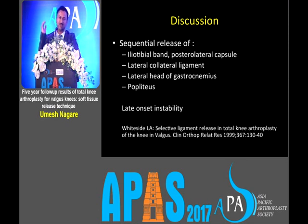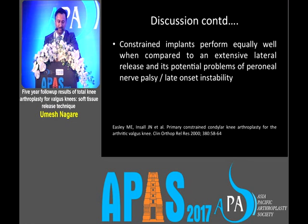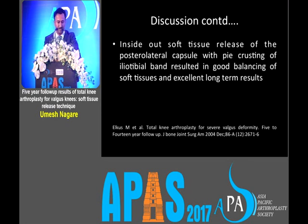Whiteside has clearly mentioned that with sequential release progressing to the popliteus, PS knees may lead to late-onset instability. Haley also mentioned that constraint implants perform the same job as medial collateral ligament advancement without the risk of non-union at the advancement site. Elsley similarly noted that constraint implants perform equally well compared to extensive lateral release, avoiding potential complications like peroneal palsy. Inside-out soft tissue release of the posterolateral capsule with pie-crusting of the iliotibial band resulted in good soft tissue balancing and excellent long-term results.